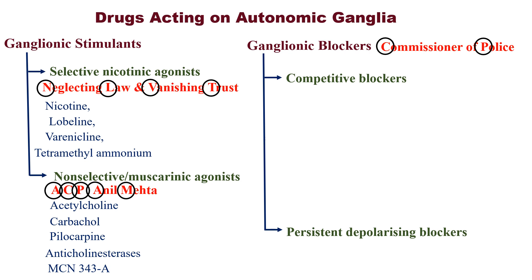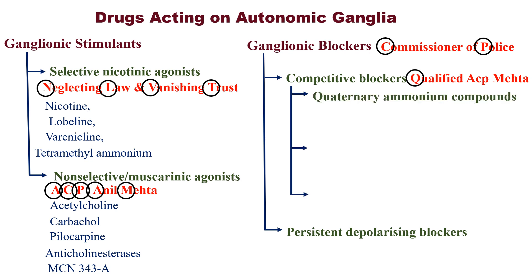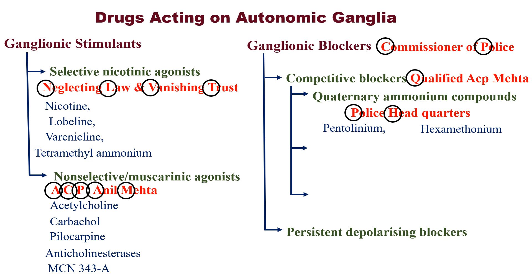Who is the competitive blocker of this criminal gang? A qualified ACP Mehta. Q stands for quaternary ammonium compounds. This qualified ACP Mehta is staying in Police Headquarters. Remember this mnemonic for quaternary ammonium compounds: P for Pentolinium, H for Hexamethonium.